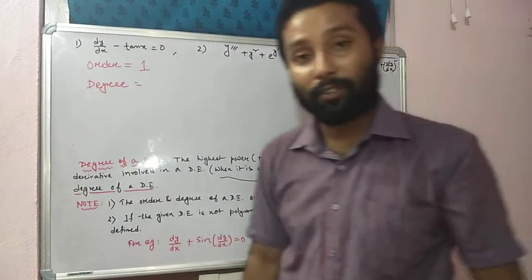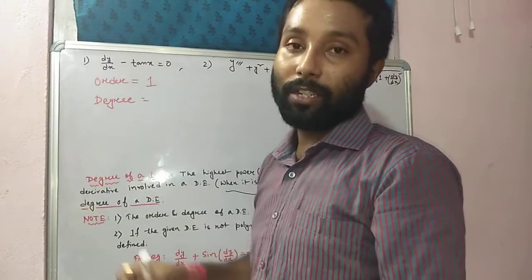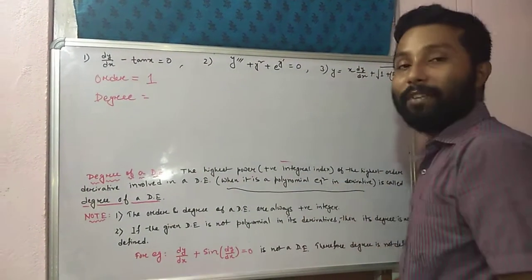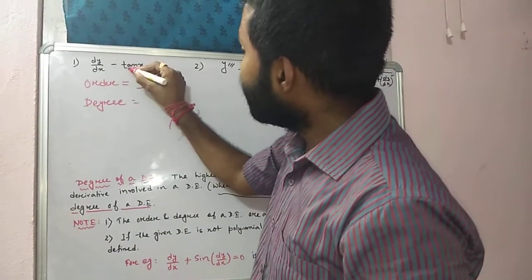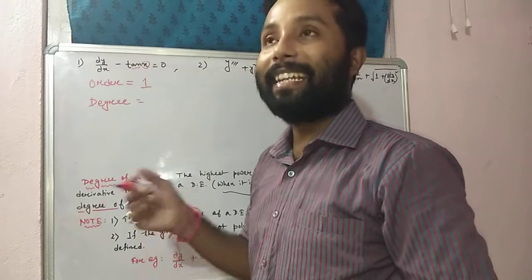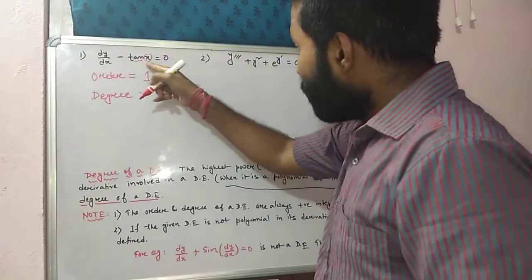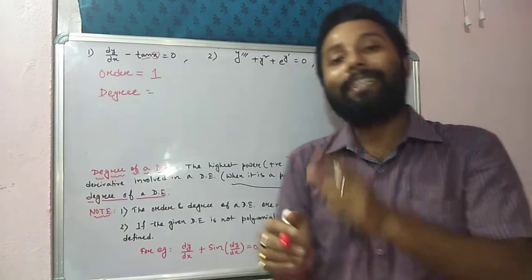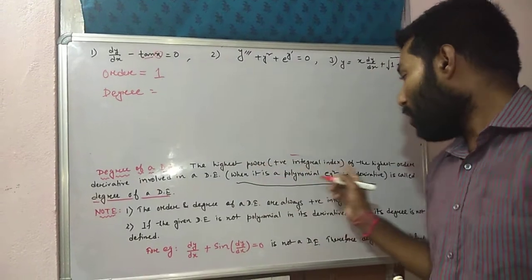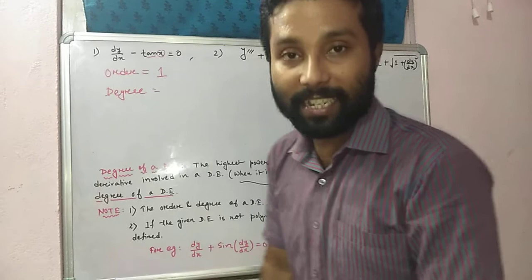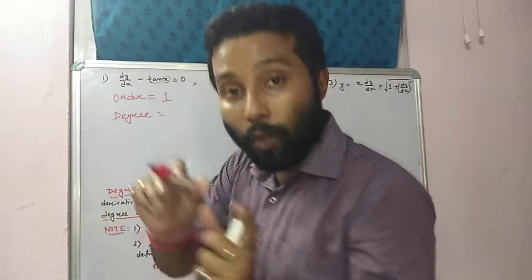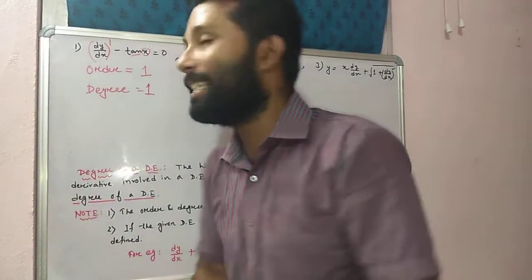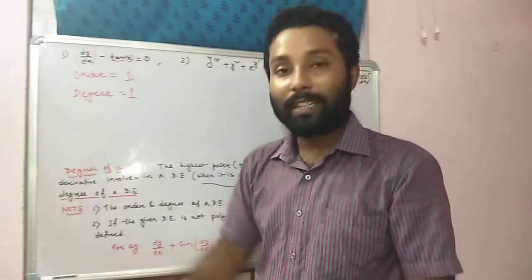Whether this equation is a polynomial in its derivative or not? Yes, it is a polynomial in its derivative because 10x is a standard angle like x, 10x, 10θ, 10y — these are standard angles. So we can say that this is a polynomial in its derivative. Therefore, we can find the degree. Degree ka definition: the highest power of the highest order derivative. Ye equation ko ekhi bar differentiation kiya gaya hai, us term ka power kya hai? One. So here order as well as degree both are one.